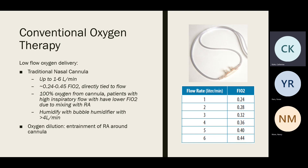The FiO2 with the nasal cannula is very variable because of oxygen dilution. When your patient is a little tachypneic, taking large tidal volumes, there's a lot of dilution from room air entering the nasal passages and oropharynx. So they may or may not be getting the 0.36 FiO2 listed at four liters if they're very tachypneic.